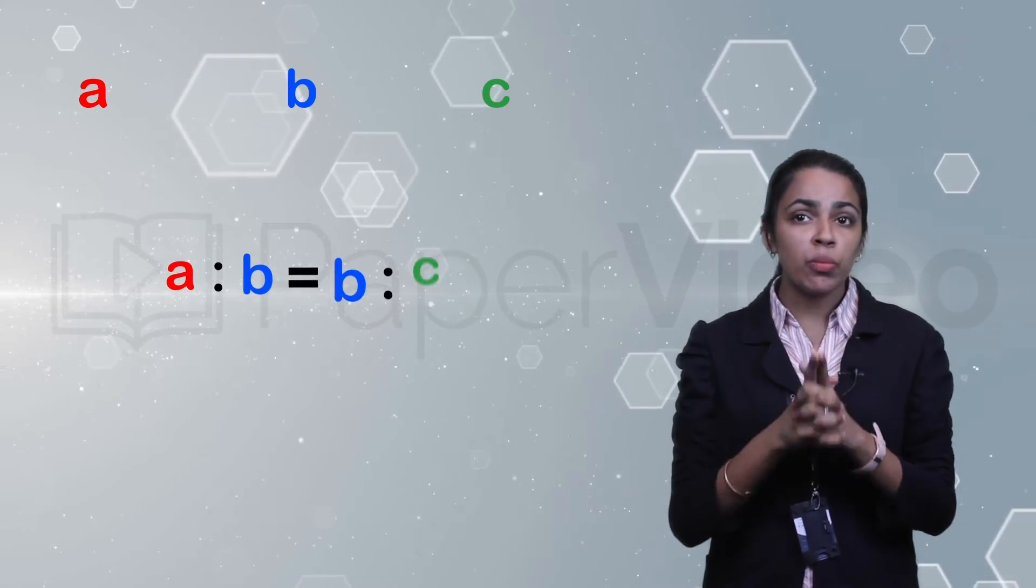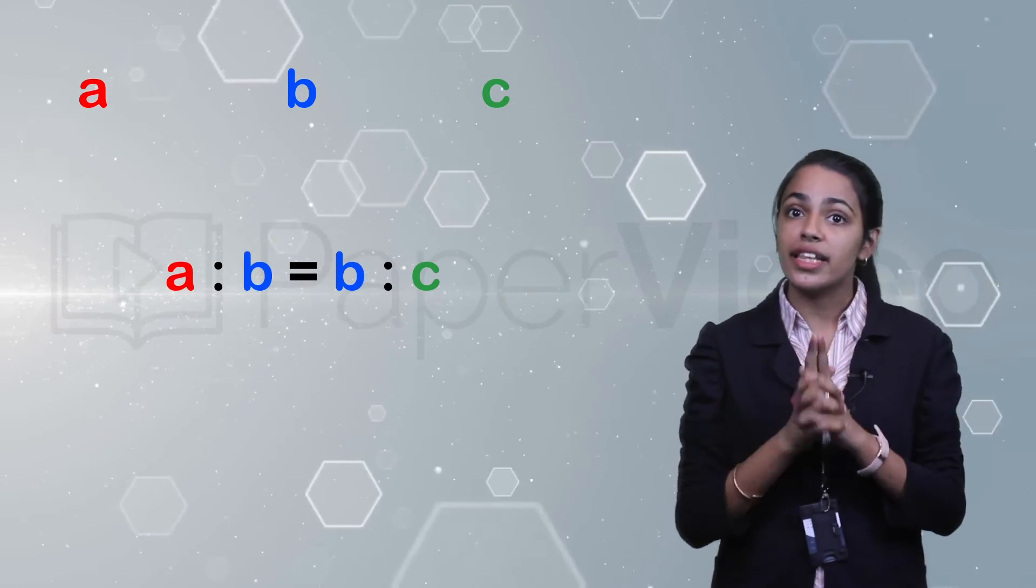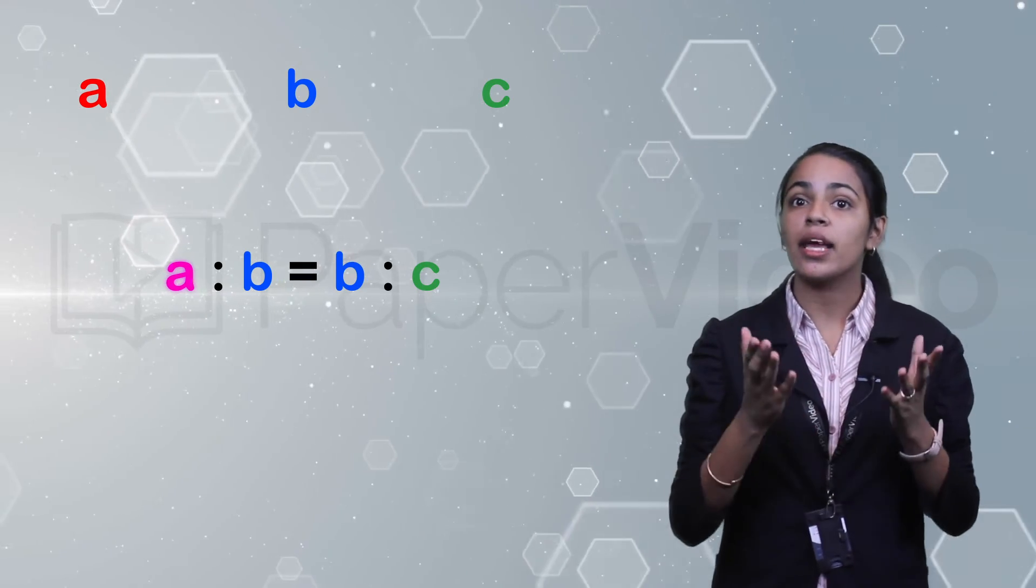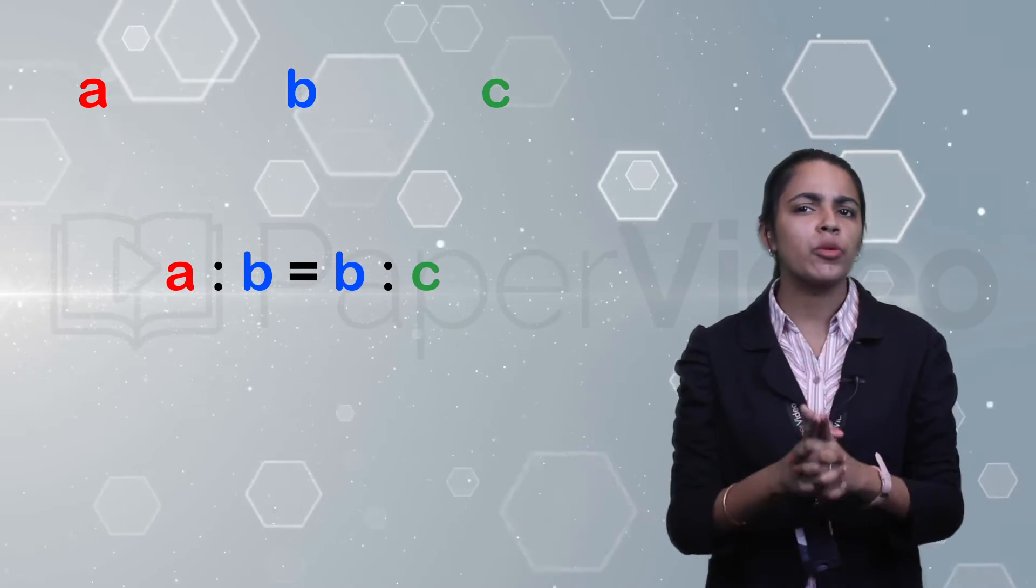If A is to B equal to B is to C, then we say that A, B, and C are in continued proportion.